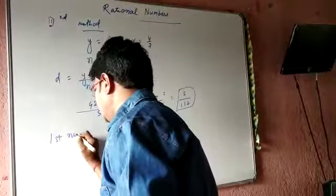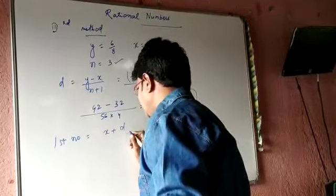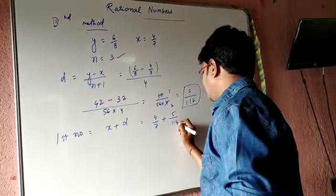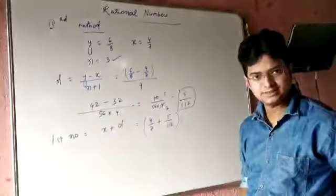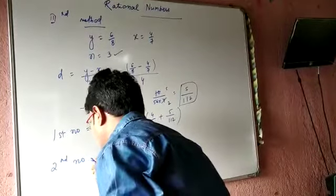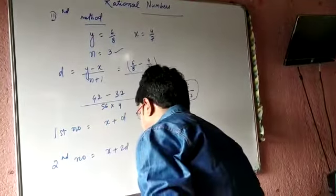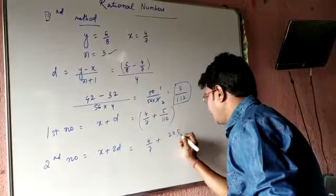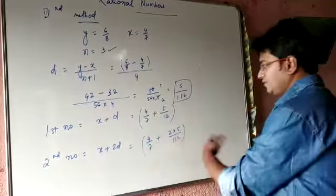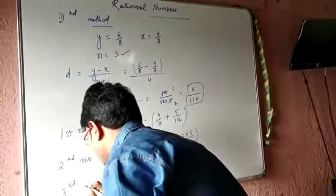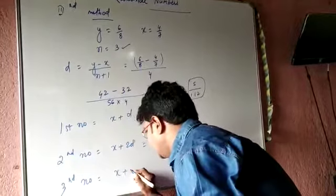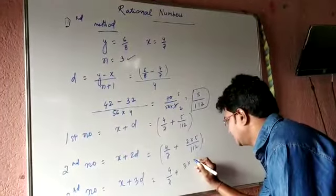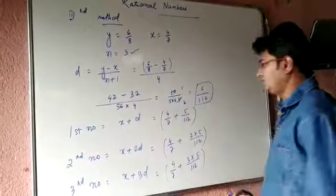To insert the first number, it is x plus d: four by seven plus five by 112. To get the second number, it is x plus 2d: four by seven plus two times five by 112. The third number is x plus 3d: four by seven plus three times five by 112. Solving each expression gives the three numbers between four by seven and six by eight.